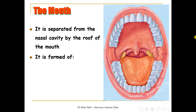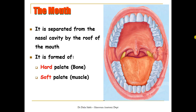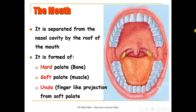The palate is formed of two parts. The hard palate is made of skull bones, so it is hard. The soft palate is at the very posterior end and is made of muscle. In the middle, we have a finger-like projection extending from the soft palate called the uvula.